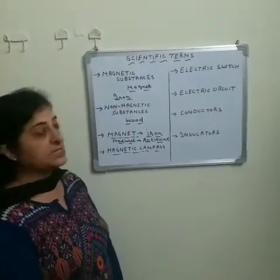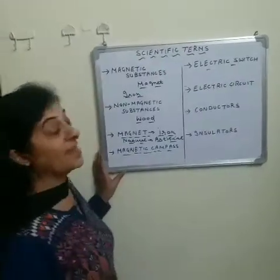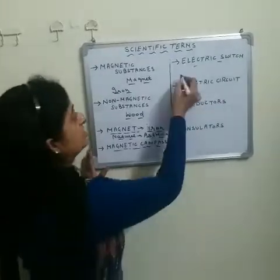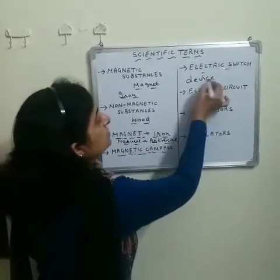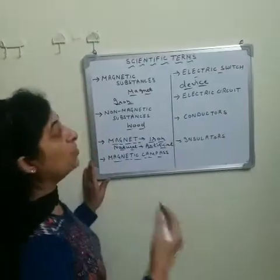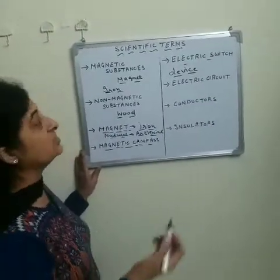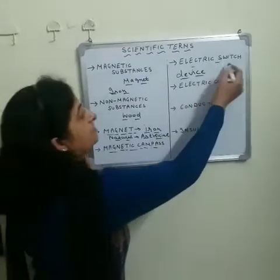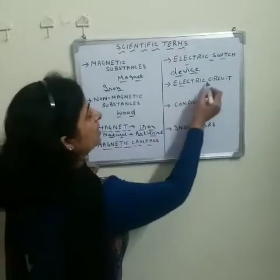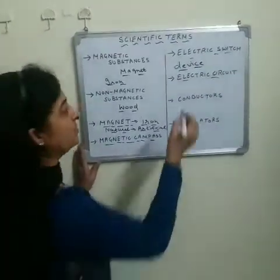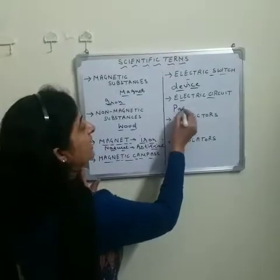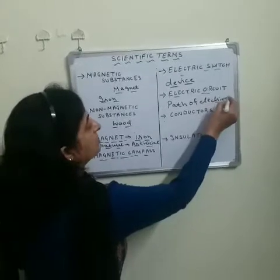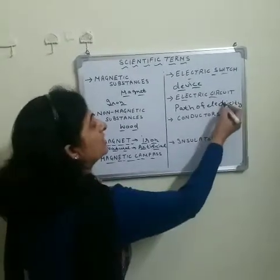Our next term is electric switch. A switch is a device which is used to turn on and off the electricity. Now, talking about the electric circuit — an electric circuit means the path of electricity. Through this path, electricity flows from one terminal to the next terminal.